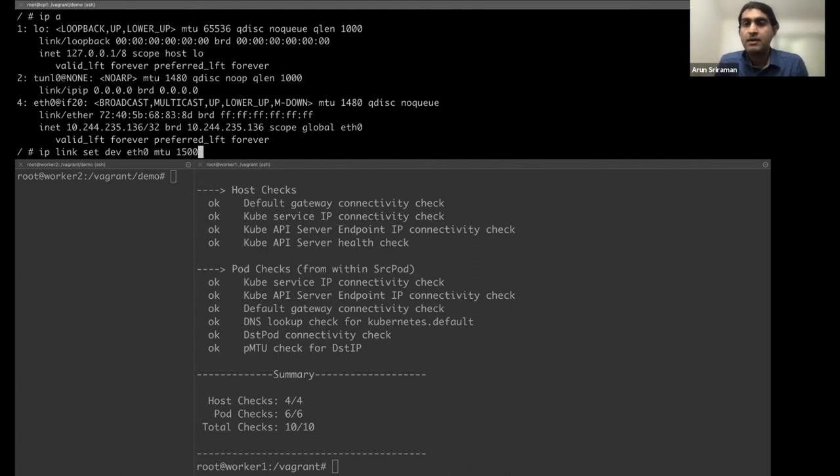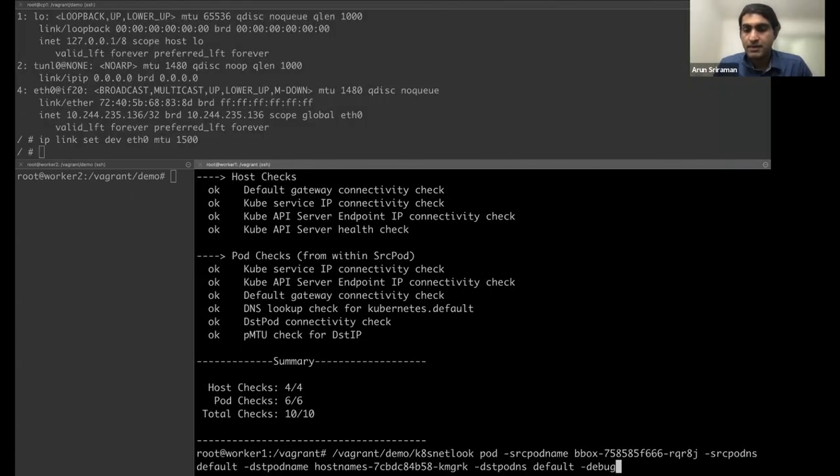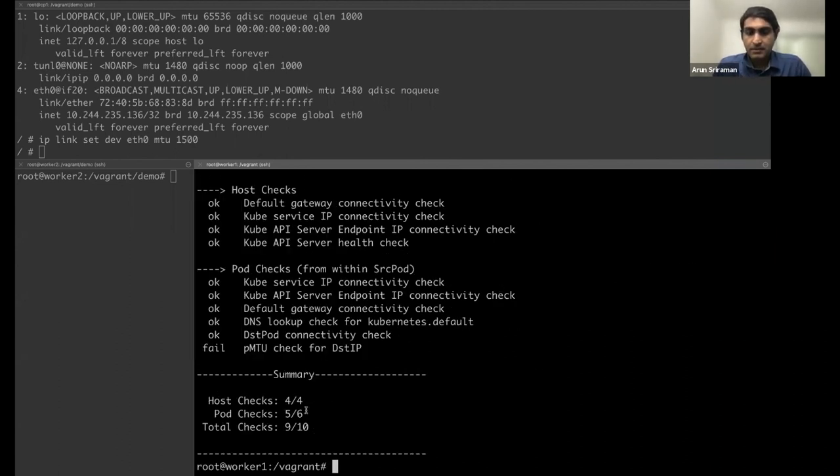But then we are running an overlay with Calico in IPIP mode. So it is going to need 20 bytes for the encapsulation header. So if I do this, now let's see what happens. Connectivity check works, but something failed. So let's look at what failed.